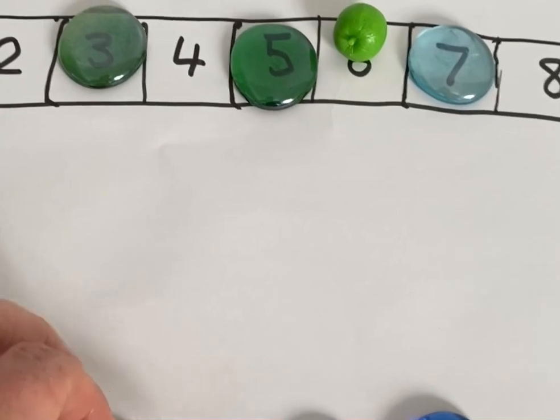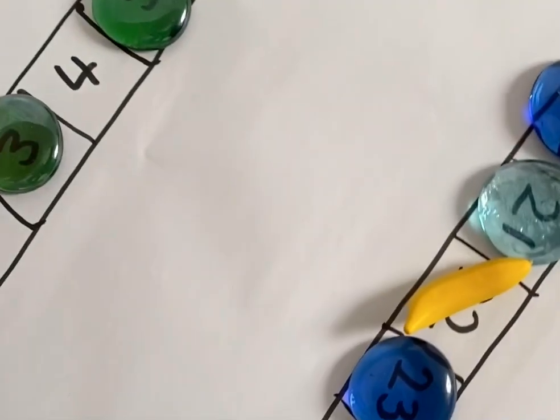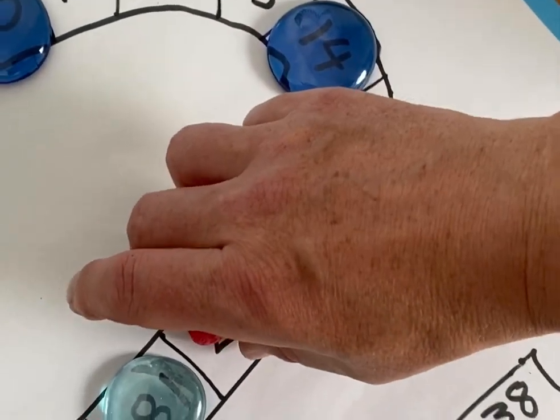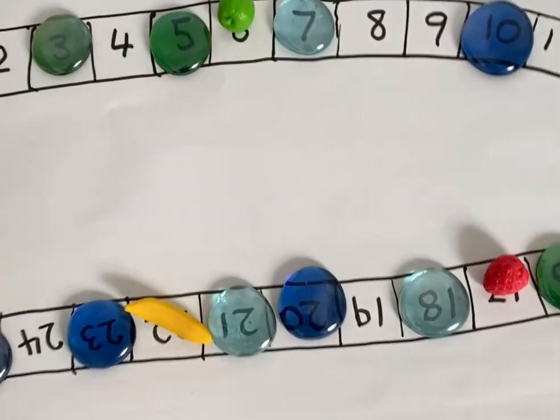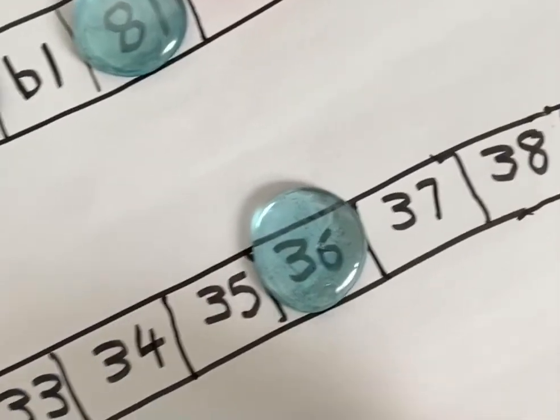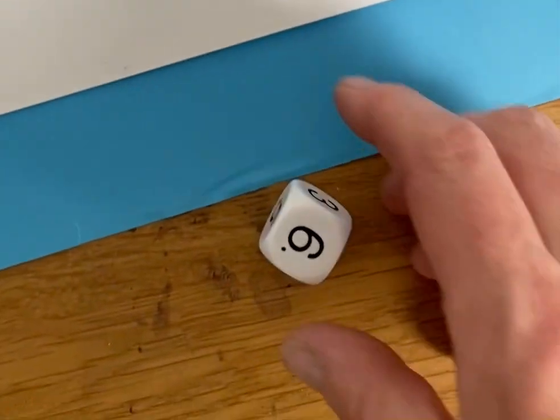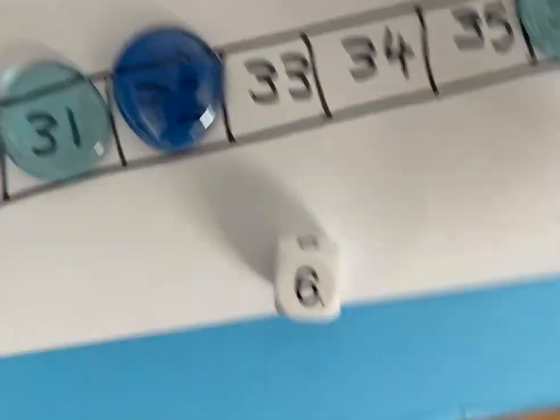Now each player puts their playing piece on any empty square. We're not starting from zero or the beginning this time - anywhere you like. We're going to roll a dice or spin a spinner, and whatever you roll or land on, that's how many you move in either direction, so you can go forwards or backwards.